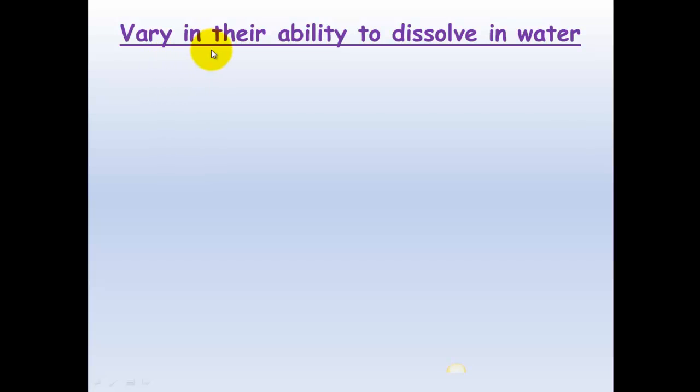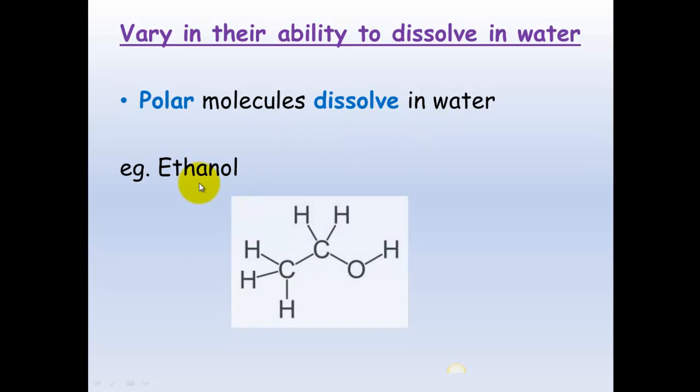Covalent molecules will also vary in their ability to dissolve in water. Polar molecules dissolve in water quite easily, for example ethanol. If you have a look at ethanol, this is the structure here. You'll see there's a polar group on the outside which sets up a positive and a negative dipole. This can then interact with water molecules which also have a positive and negative end.